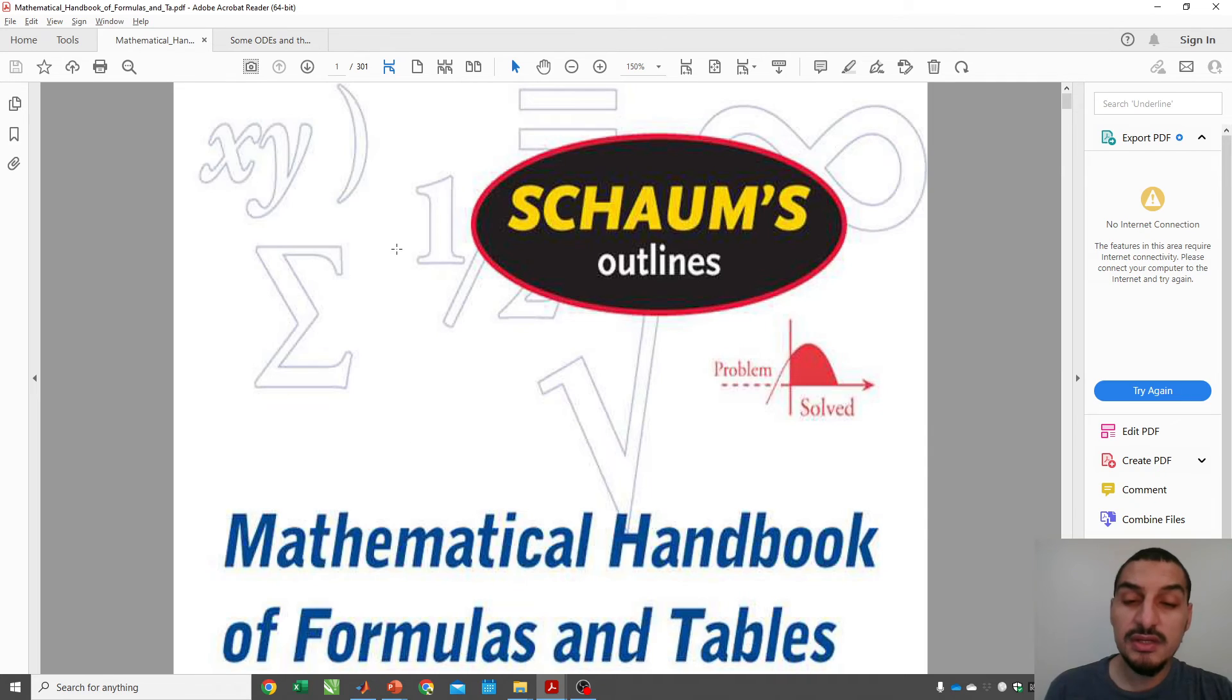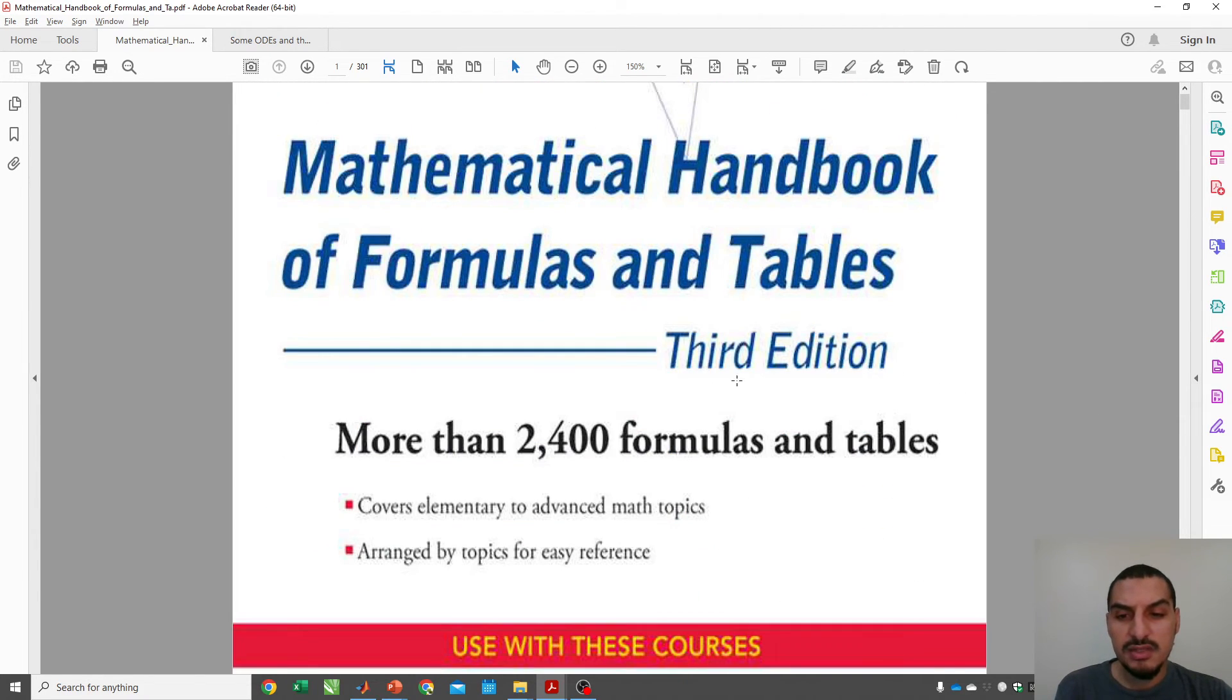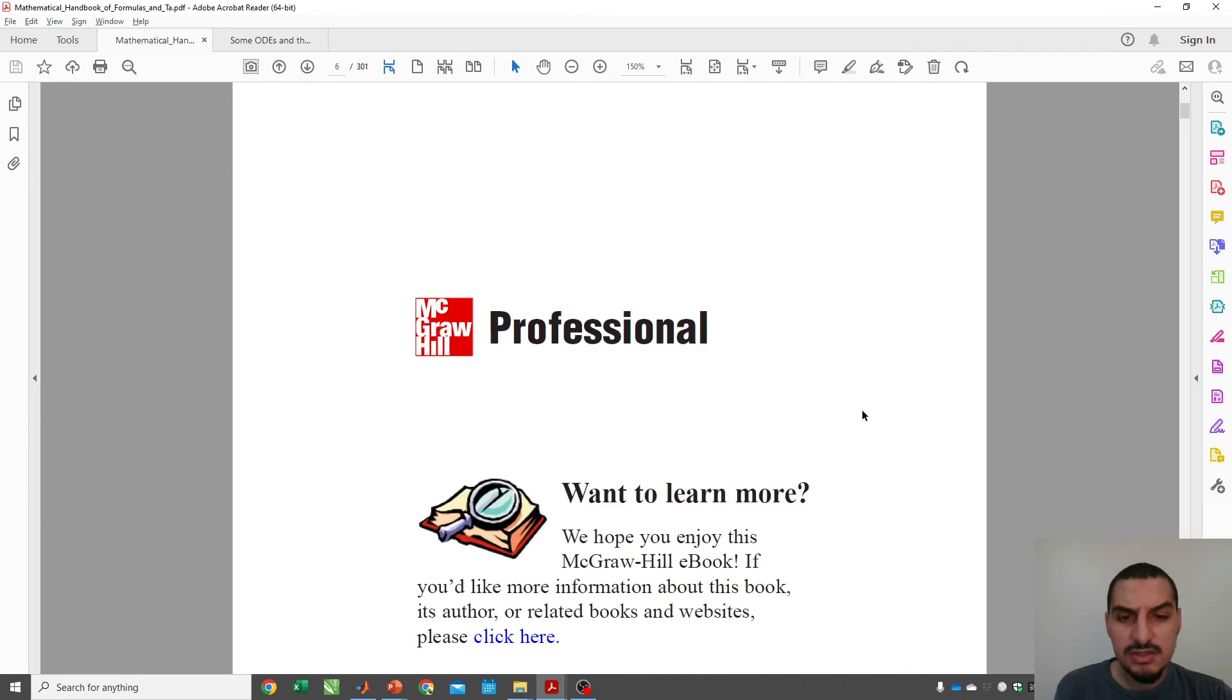The second is a very useful textbook, which is called Mathematical Handbook of Formulas and Tables. And this is a textbook that is, I believe, is a very useful reference that you need to have. If you have any application that requires mathematics, this is going to be the best place to search for information. This contains more than 2,400 formulas and tables that cover almost everything that relates to mathematics.